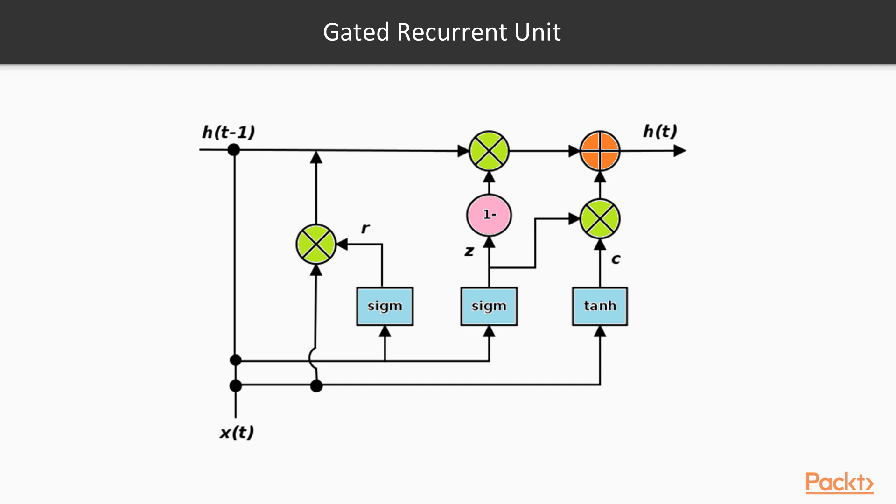The first step in our LSTM is to decide what information we are going to throw away from the cell state. This decision is made by a sigmoid layer called the forget gate.